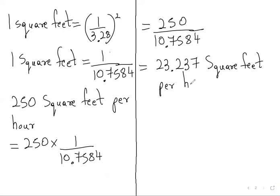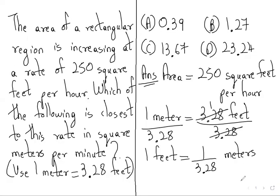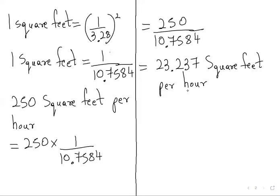We need it in minutes. Since 1 hour equals 60 minutes, we divide by 60, so 23.237 divided by 60.